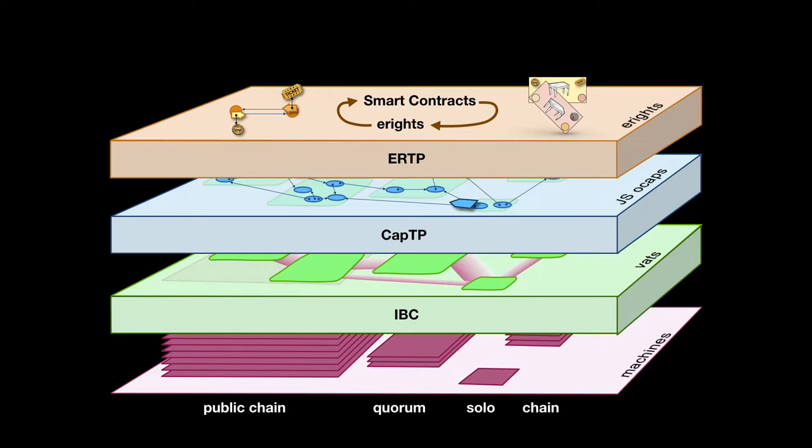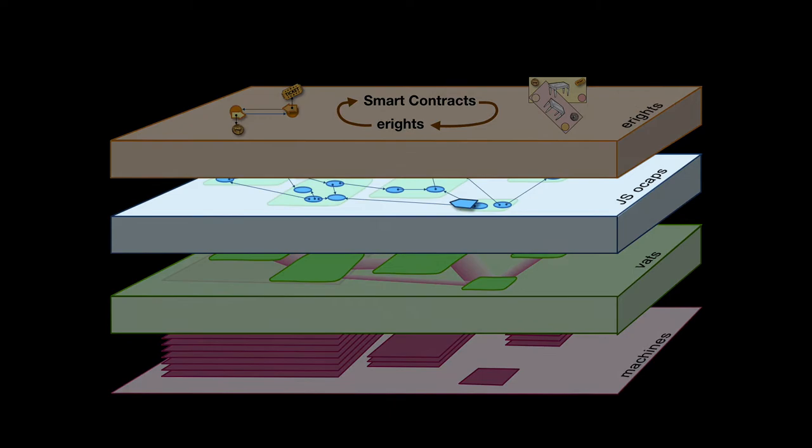That loop there, I'll be coming back to that, but that loop is the duality of e-rights and smart contracts. And that's the key to the compositionality - a smart contract manipulates rights, but a smart contract also creates new derived rights that, in turn, smart contracts can manipulate. But let's focus first on the object capability layer.